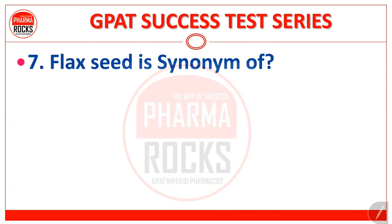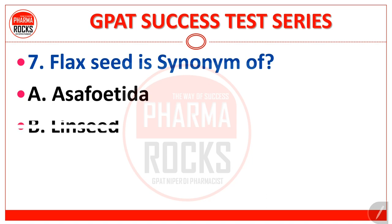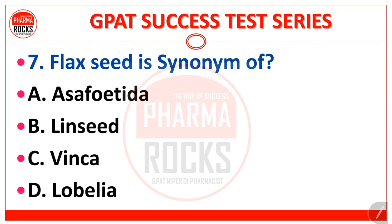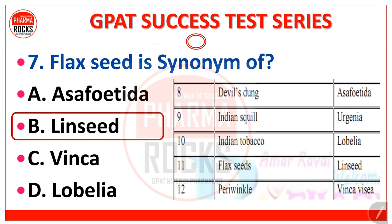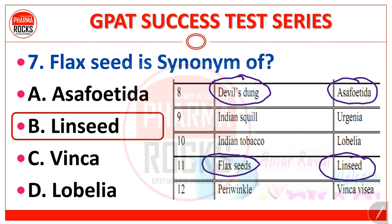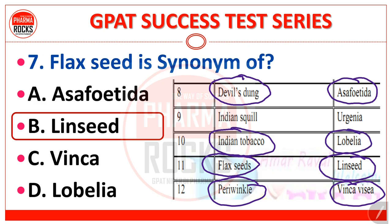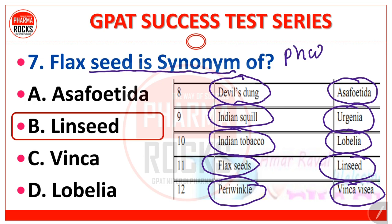Next, question number 7: flaxseed is a synonym of — Asafoetida, Linseed, Vinca, or Lobelia? The correct answer is Linseed. Remember this table: Asafoetida's synonym is devil's dung. Flaxseed is the synonym for Linseed. Periwinkle is Vinca — associated with alkaloids. And Lobelia is the Indian tobacco.